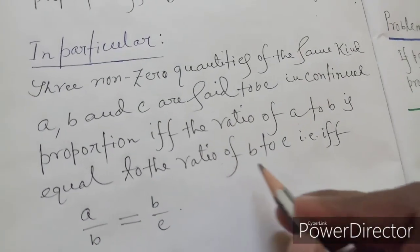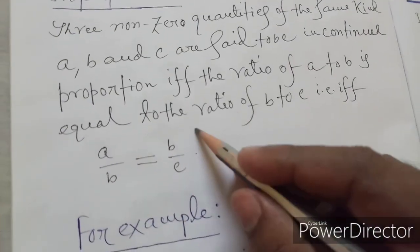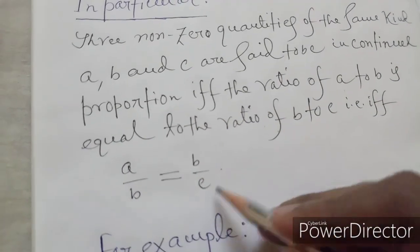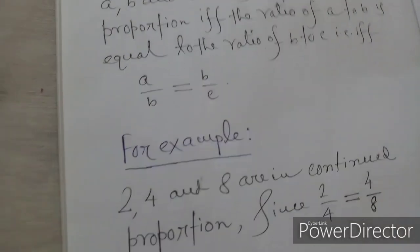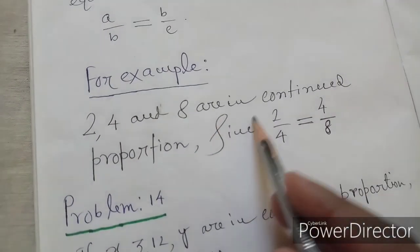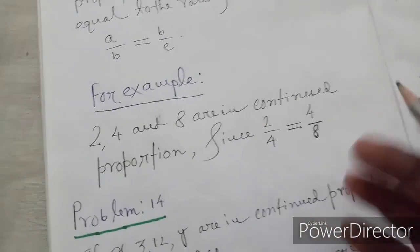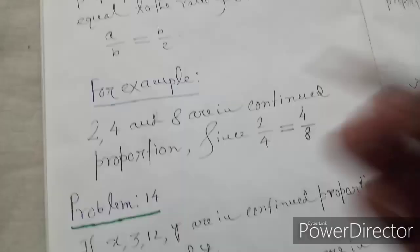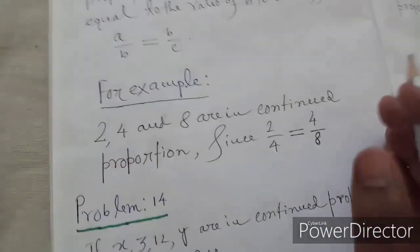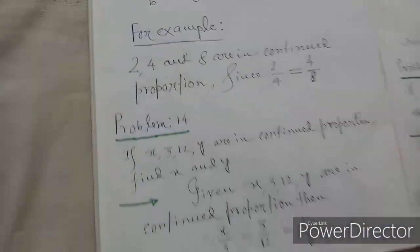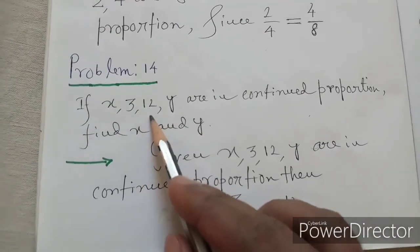If a/b = b/c, then a, b, c are said to be in continued proportion. For example, 2, 4, 8 are in continued proportion since 2/4 = 4/8 = 1/2. Because this condition holds, we say 2, 4, 8 are in continued proportion.